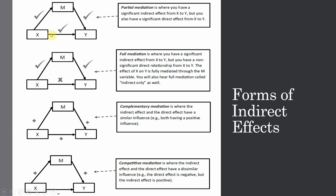In partial mediation, some effect passes directly while some is indirect. Complementary mediation is where the indirect effect — passing through M — and the direct effect — X to Y in presence of the mediator — both have similar influence, for example both positive. Competitive mediation is where the indirect effect and the direct effect have dissimilar influence, for example, the direct effect is negative and the indirect effect is positive, meaning they have different signs.